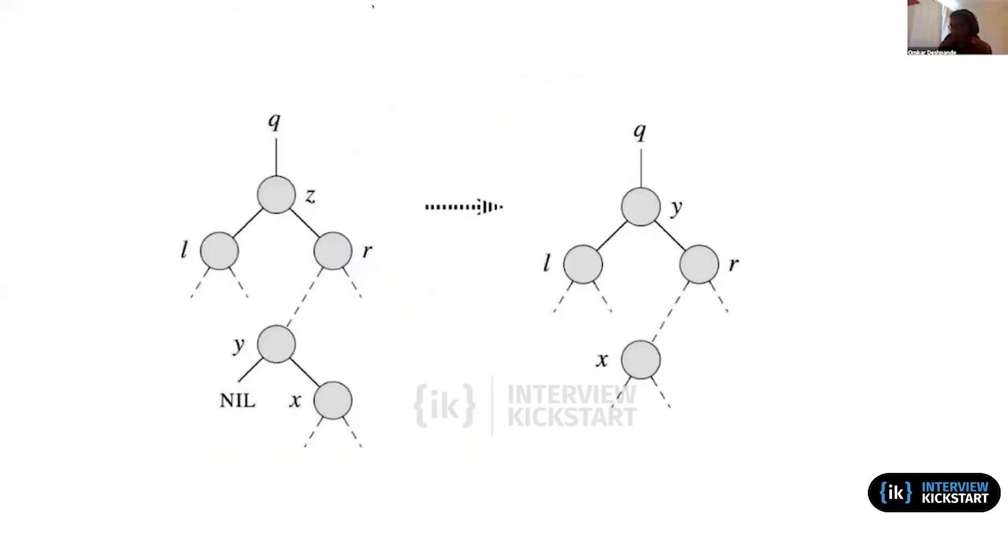In the general case also, where the successor of z is obtained by taking one step to the right and then following some path down a sequence of left pointers until we reach a leaf node whose left pointer is null, this is the successor, the in-order successor of z. So we copy this value y into this node z. That's what we do here. And then we have to physically pluck out this node. How do we physically pluck out this node? Well, we'll take whatever the parent of that node was.